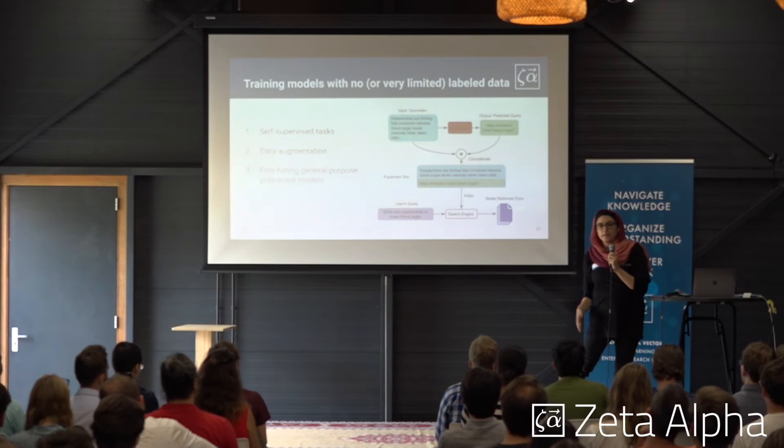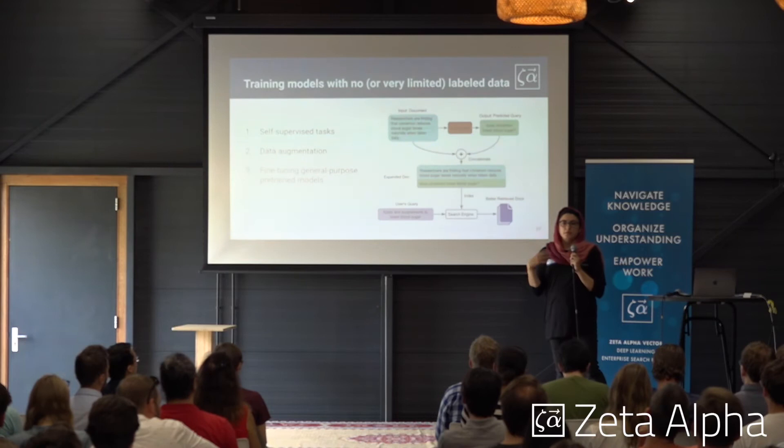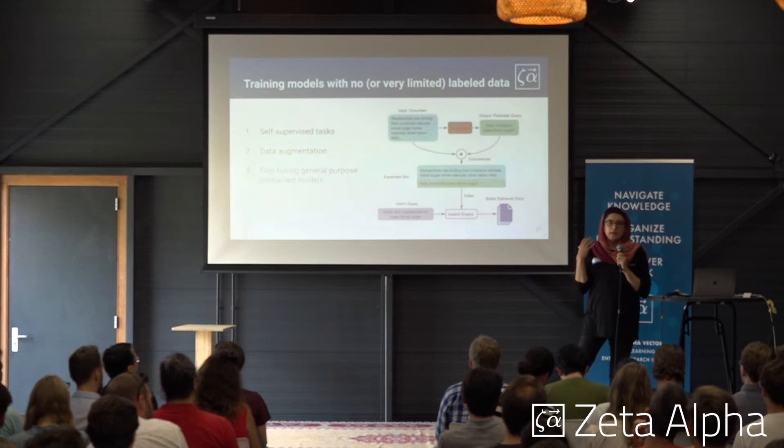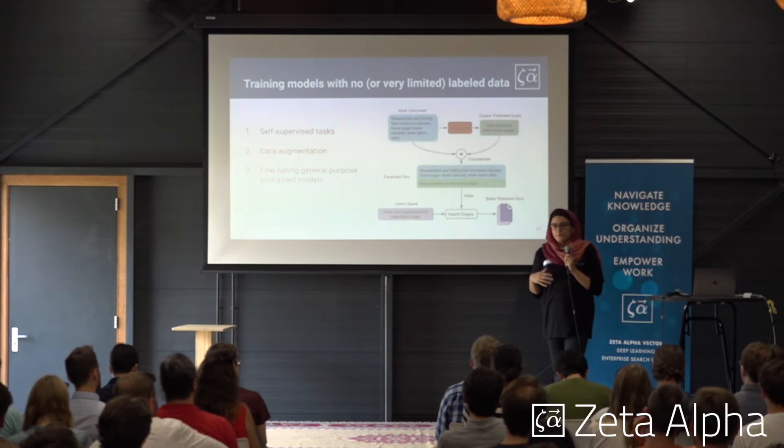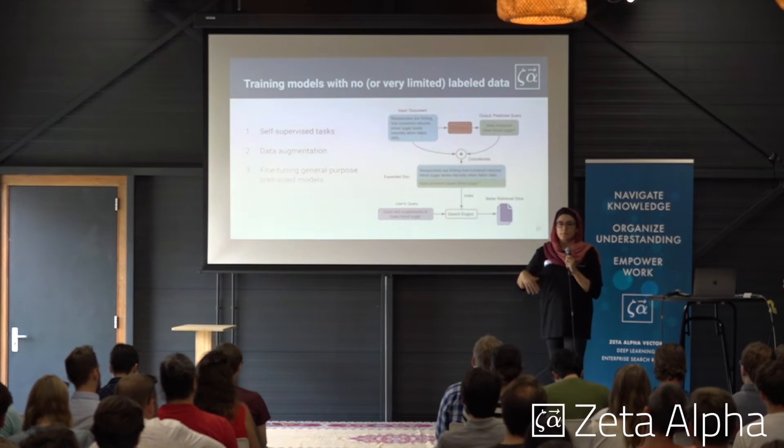One of the ways we've been working to address limited data is using self-supervised tasks. The idea is that we have this large amount of unannotated data and we can come up with self-supervised tasks that automatically extract and create the training data we need. For example, we have arXiv papers, and we can use the title as the query and the paper itself as the document to retrieve — so you don't need human annotations for that.